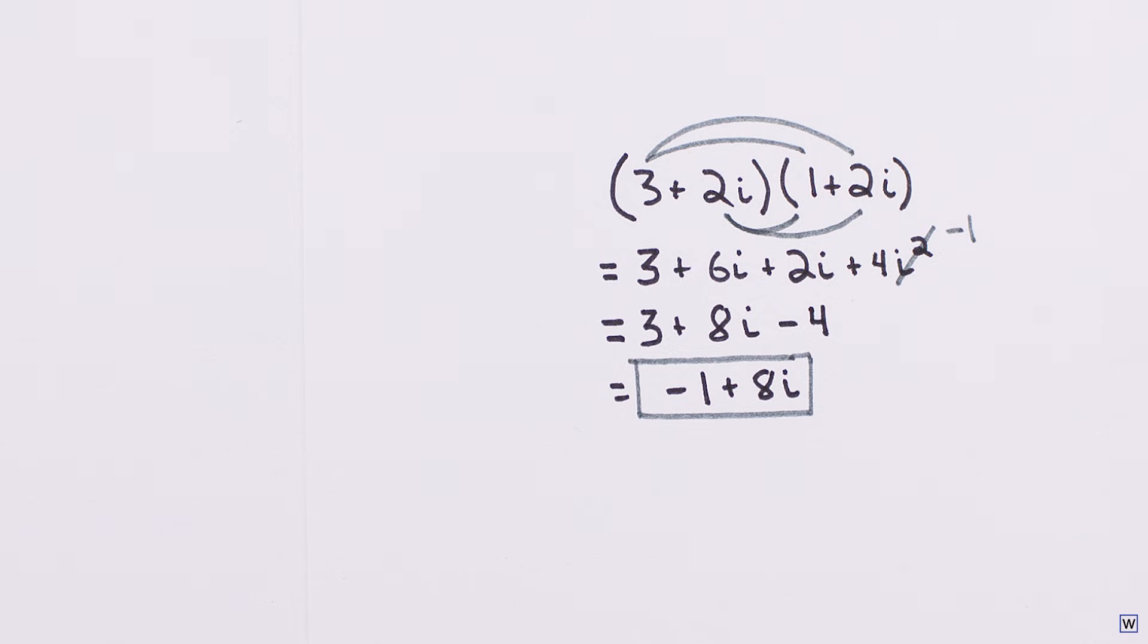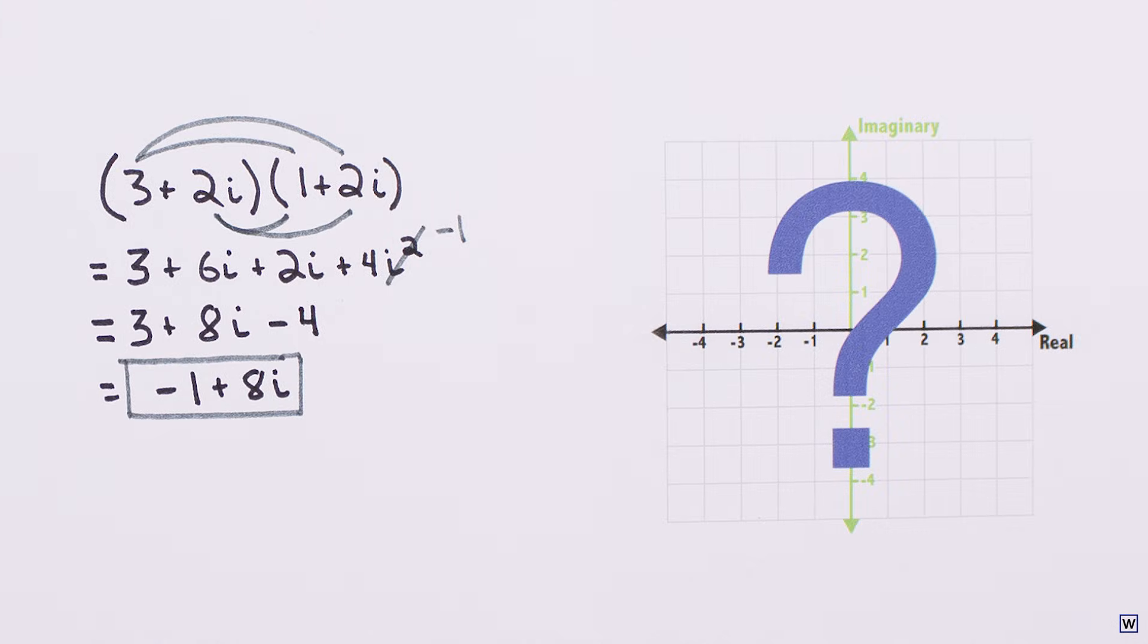There is another equally valid way to think about multiplying complex numbers, and it has everything to do with the complex plane. Instead of just telling you what this interpretation is, it'll be way more fun to try to figure it out with some examples.